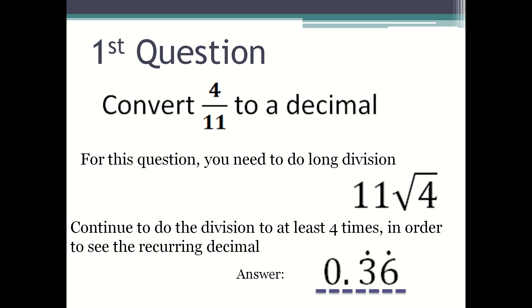The answer for this question is 0.36 recurring. As you can tell based on the dots on top of the numbers, it means that the numbers 3 and 6 are repeated, so it would be 363636 continuously.